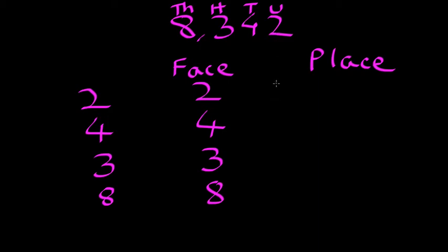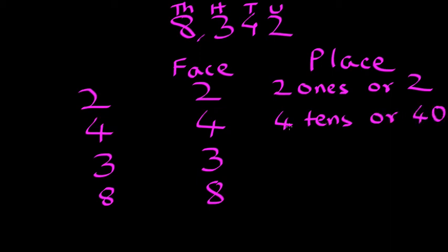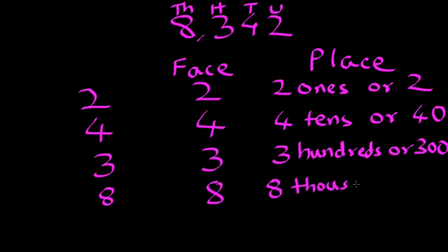For the units place, the place value here for 2 is going to be 2 ones or just simply 2. For 4, it is going to be 4 tens or simply 40. Because 4 tens will be 4 multiplied by 10, which will be same as 40. For 3, it's going to be 3 hundreds, which could also be written as 300.